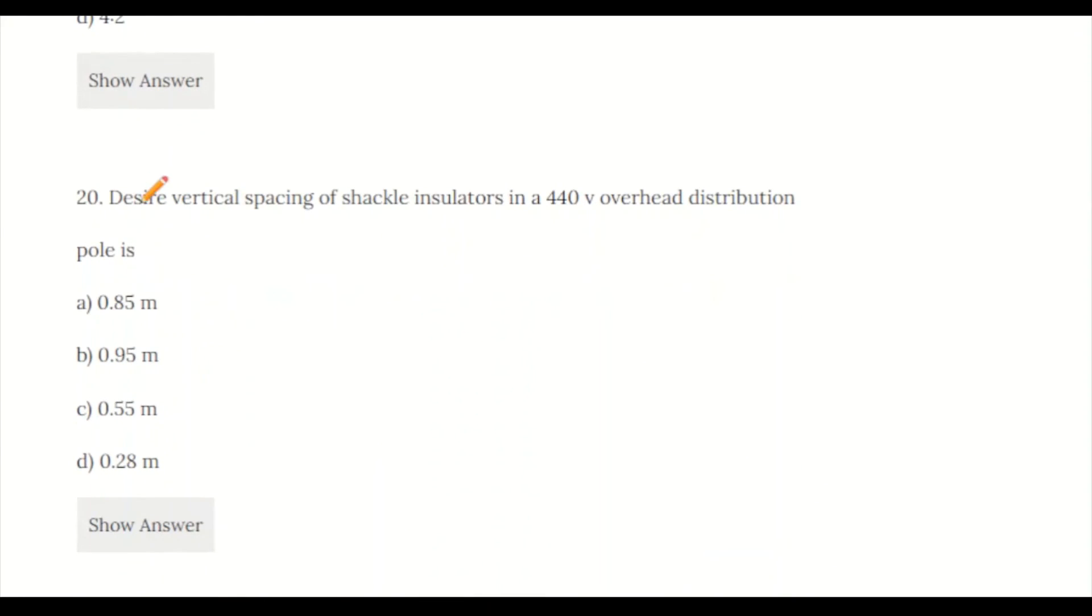Question 20: Desired vertical spacing of secondary insulators in 440 volt overhead distribution pole is 0.28 meter.